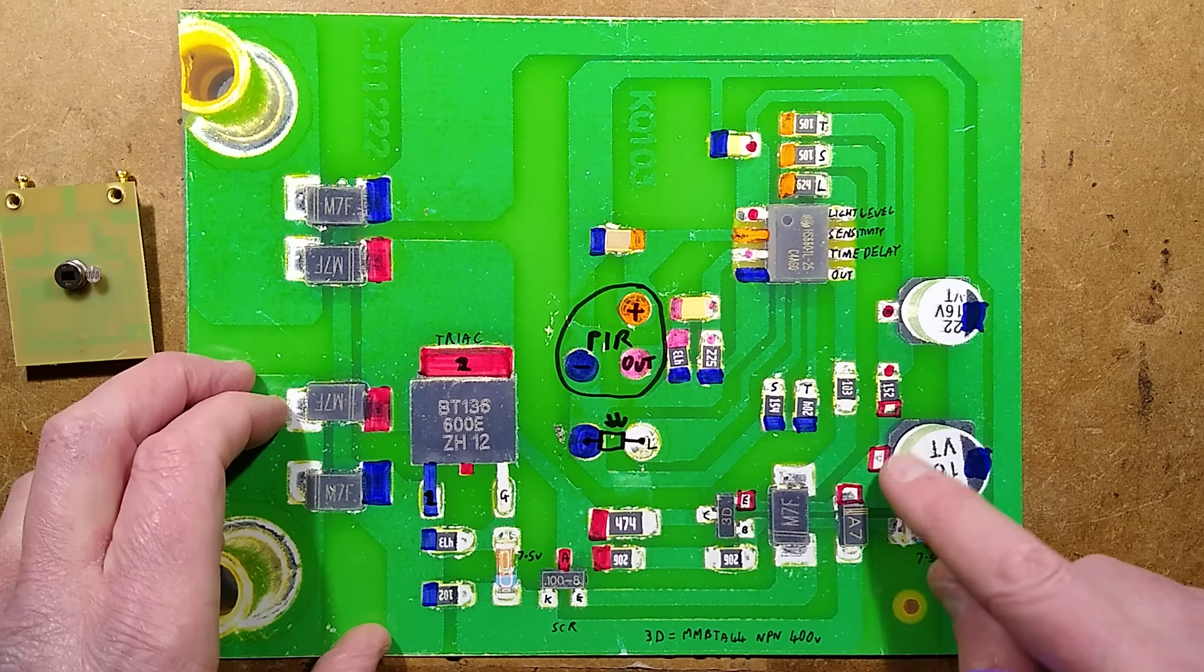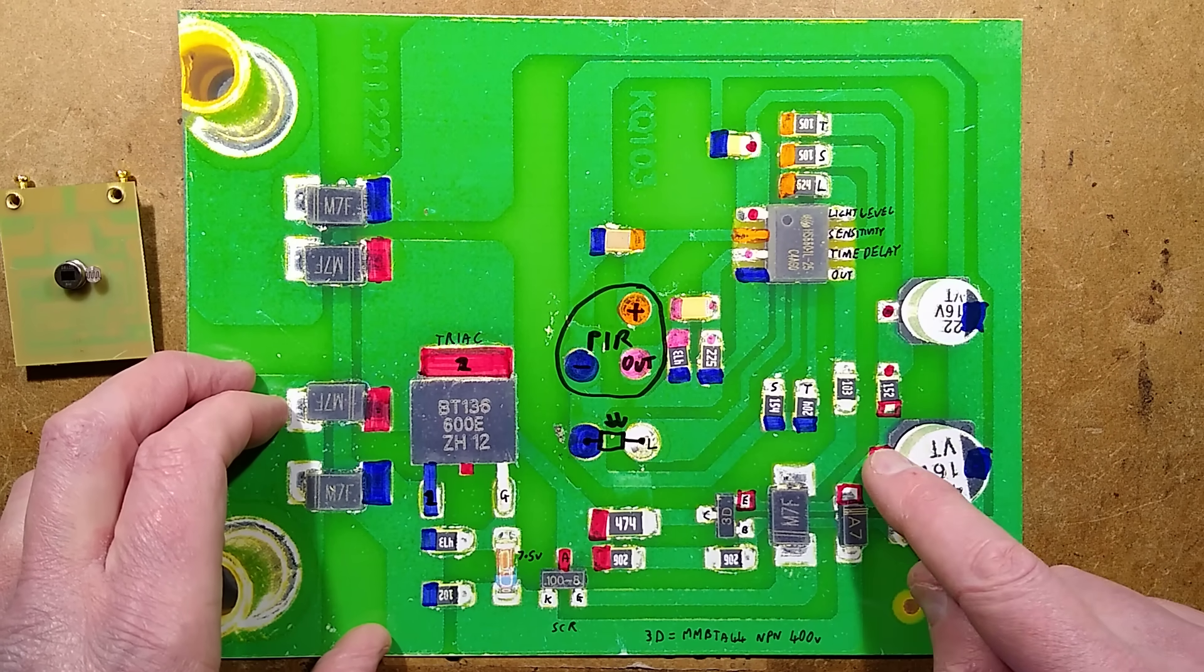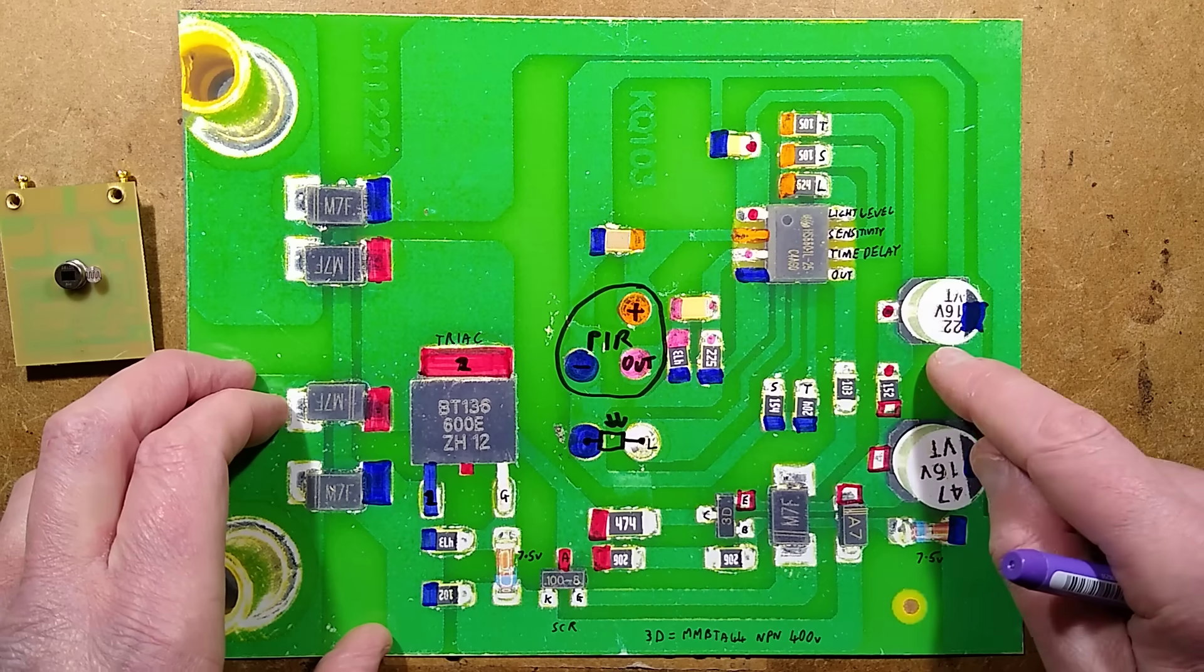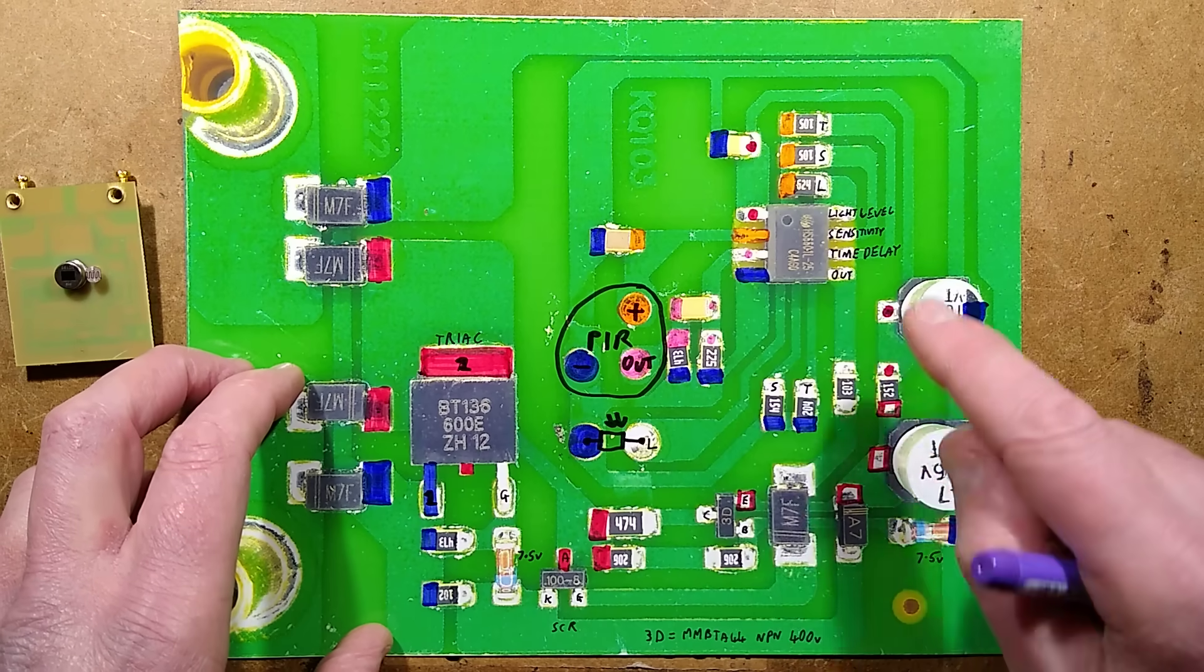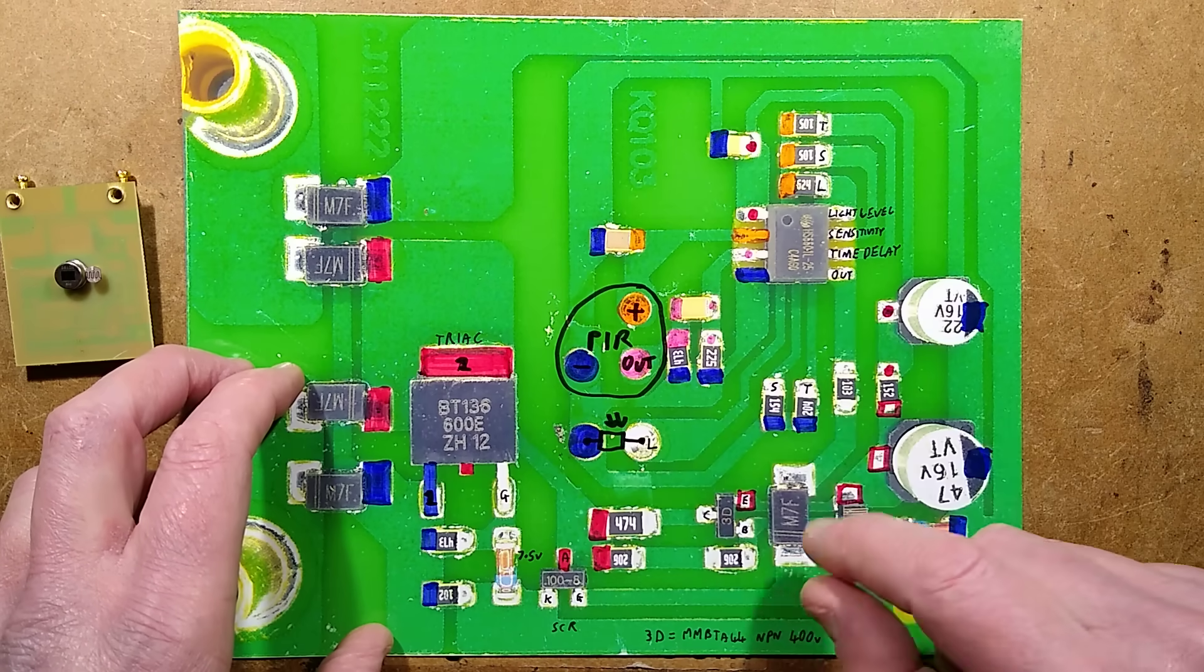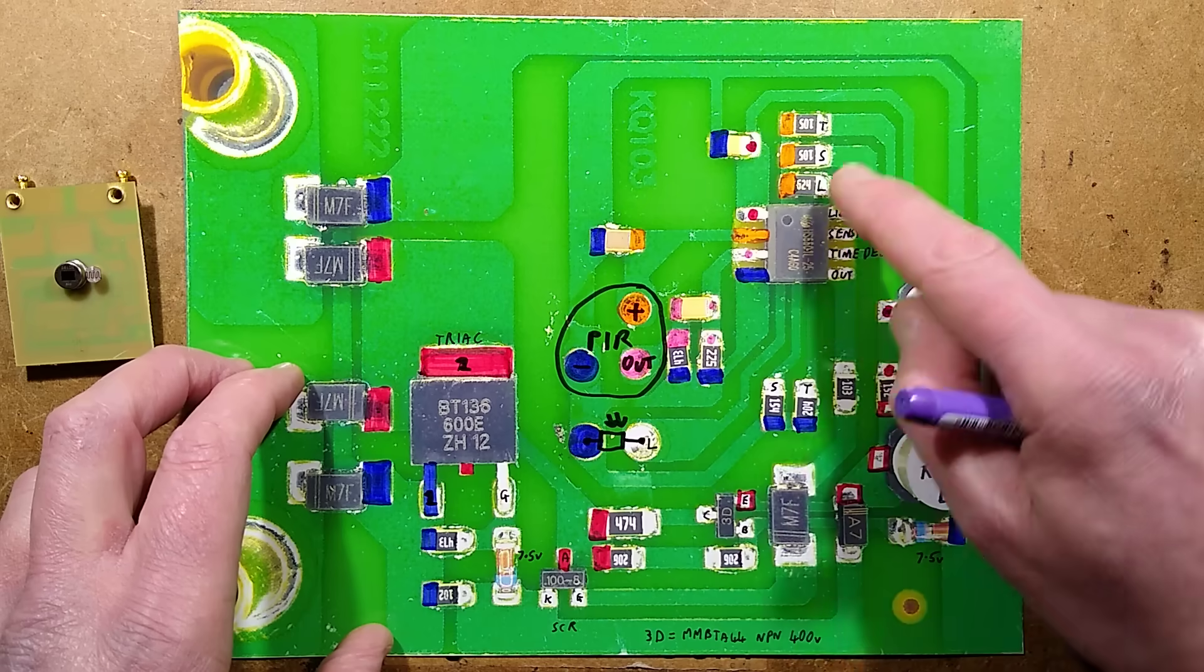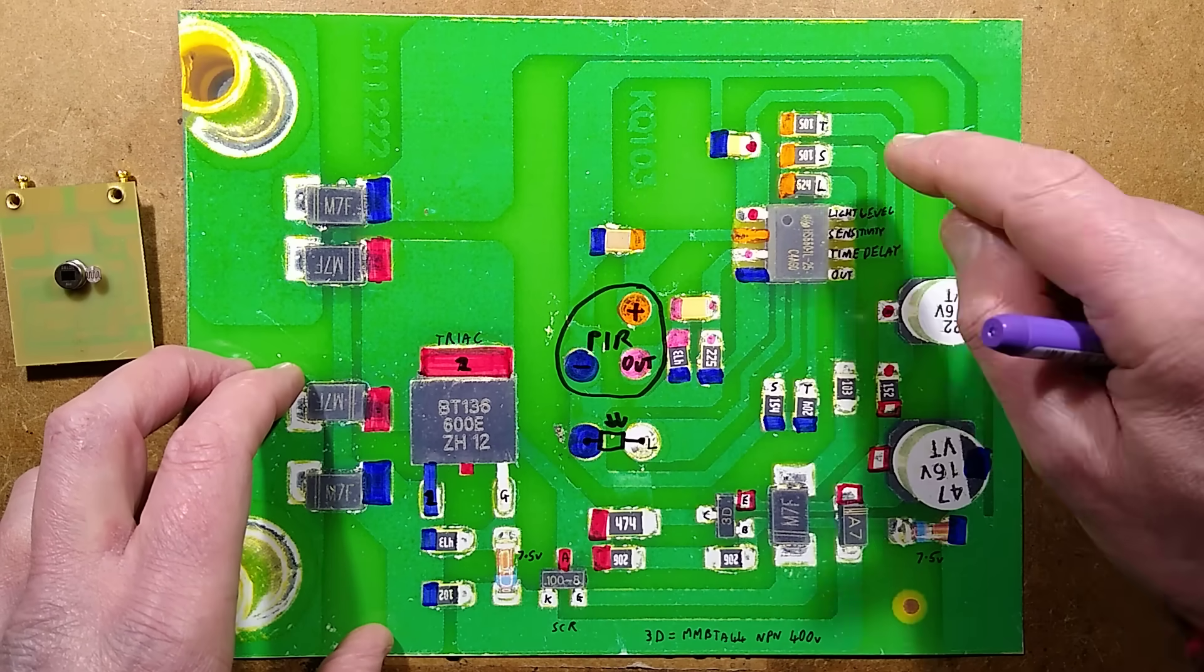That generates a power supply with this zener diode being used as a reference voltage to that transistor. There's a bit of filtering through a resistor to another capacitor, and then it goes to the chip with a little filtering capacitor again. And the chip then generates its own regulated supply, that's the orange, which powers the passive infrared detector and three potential dividers.